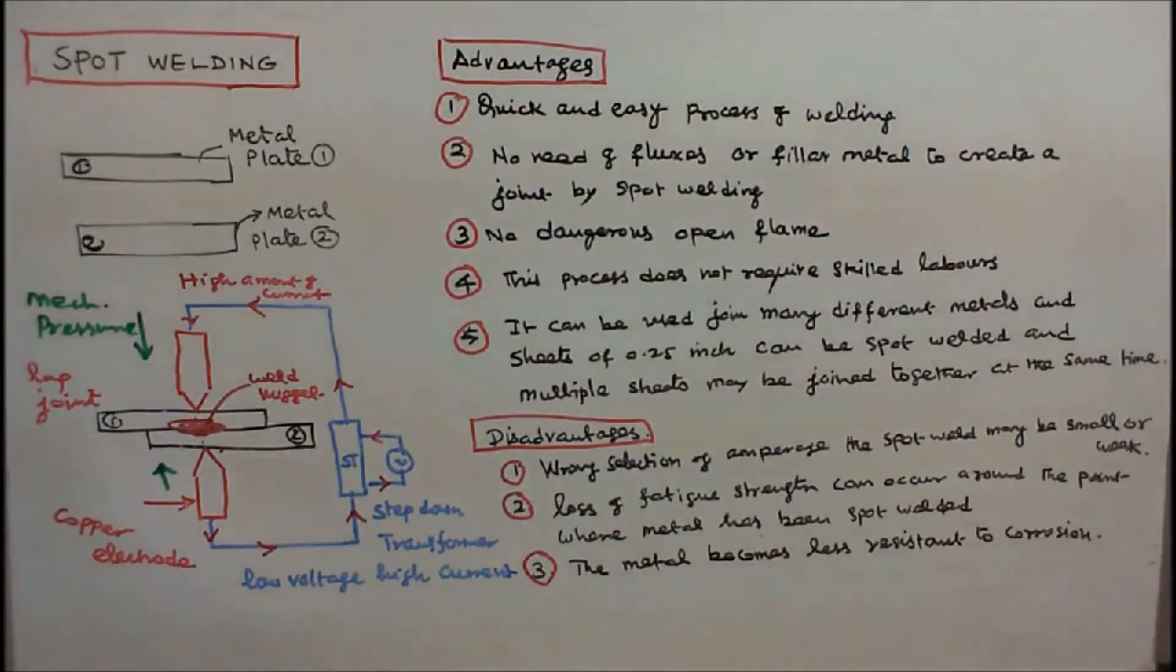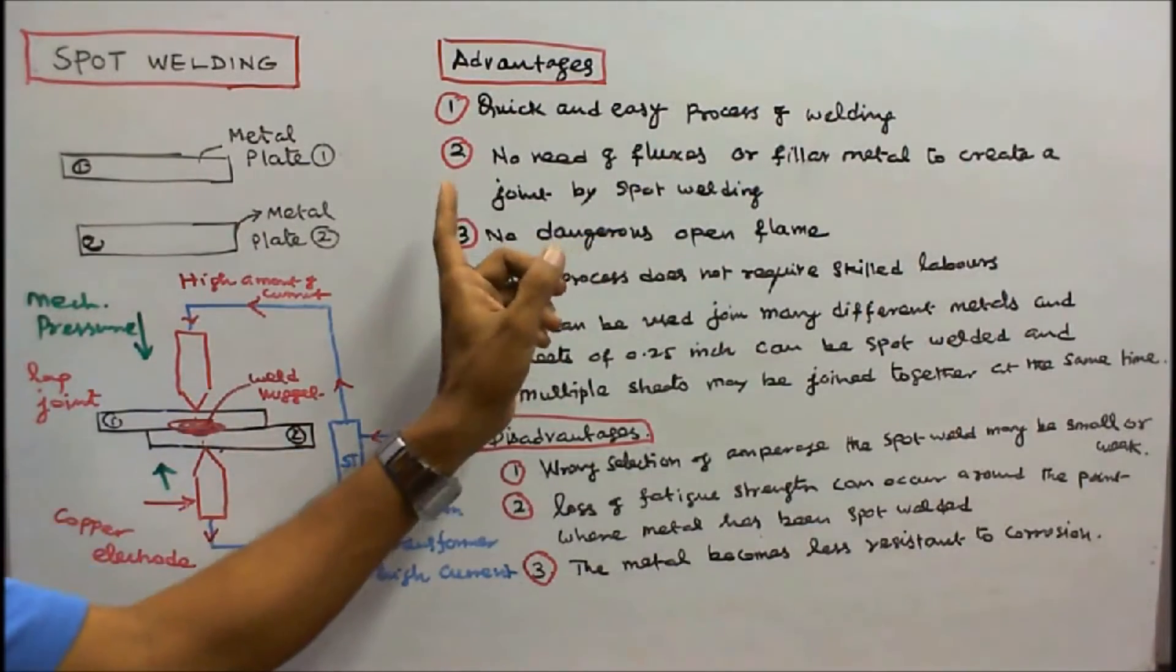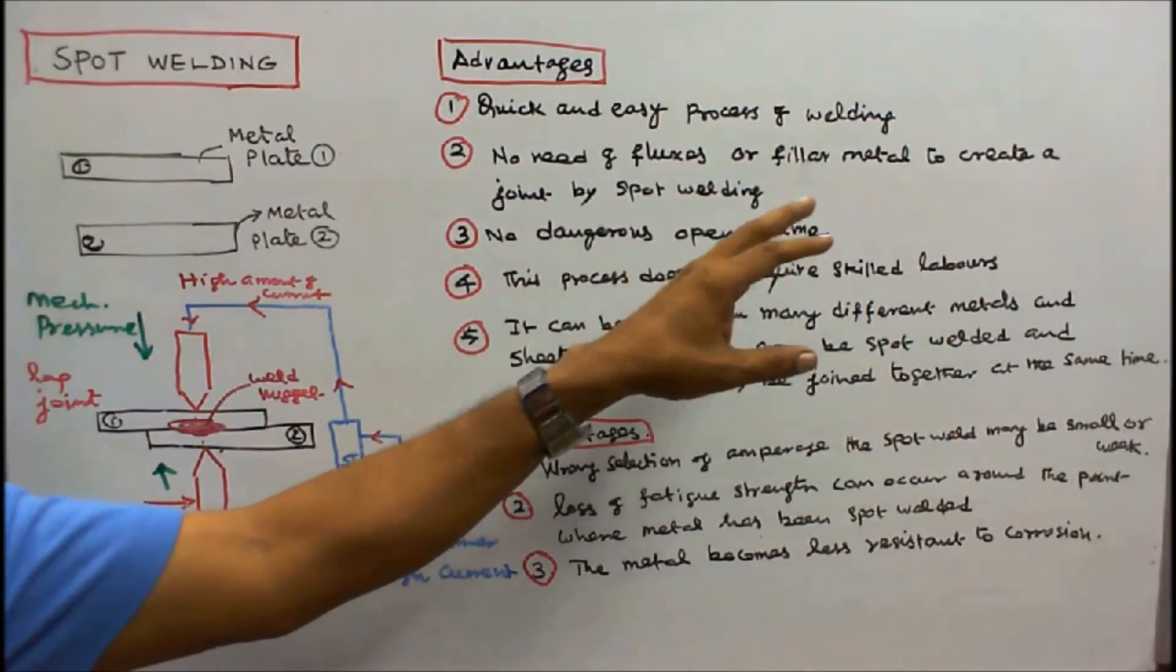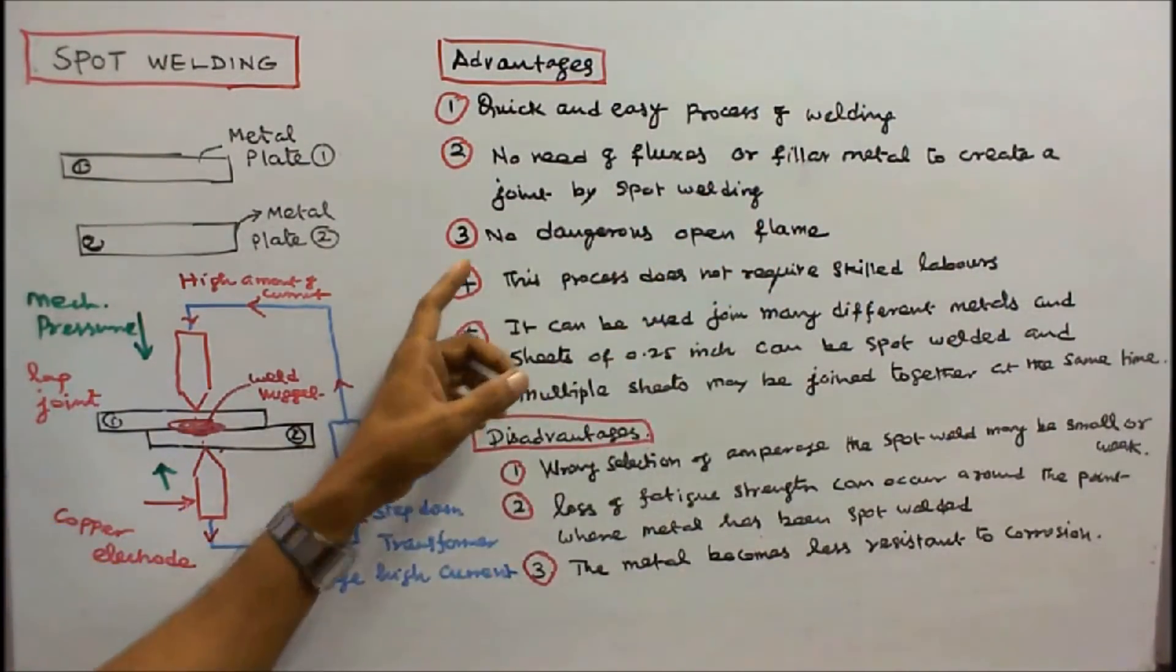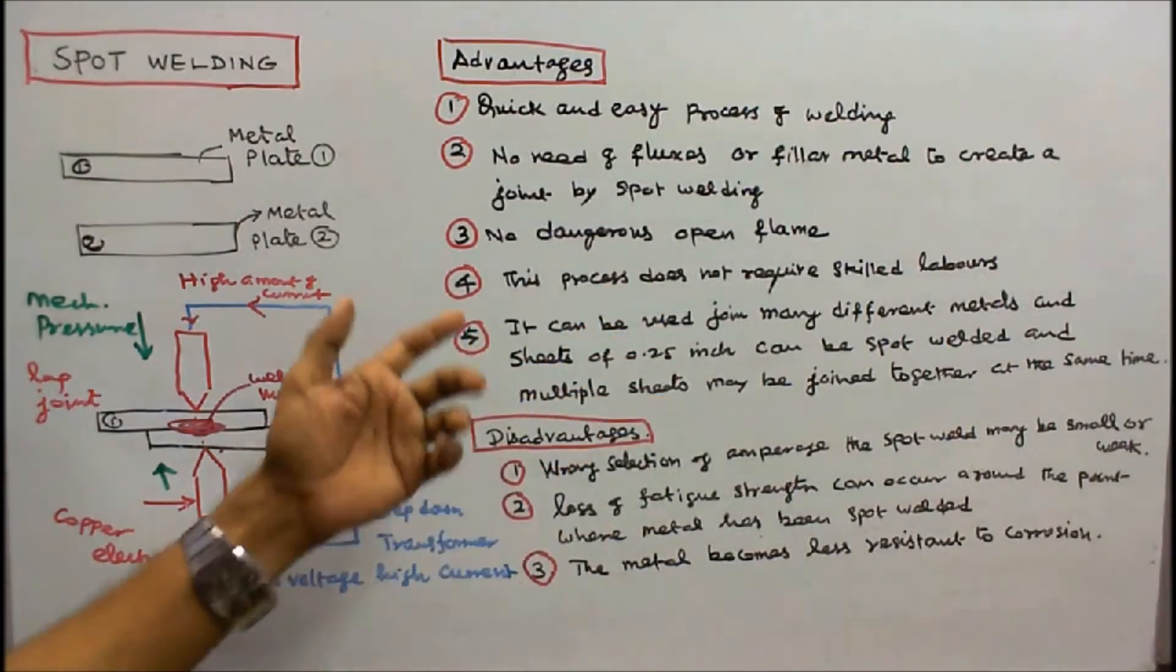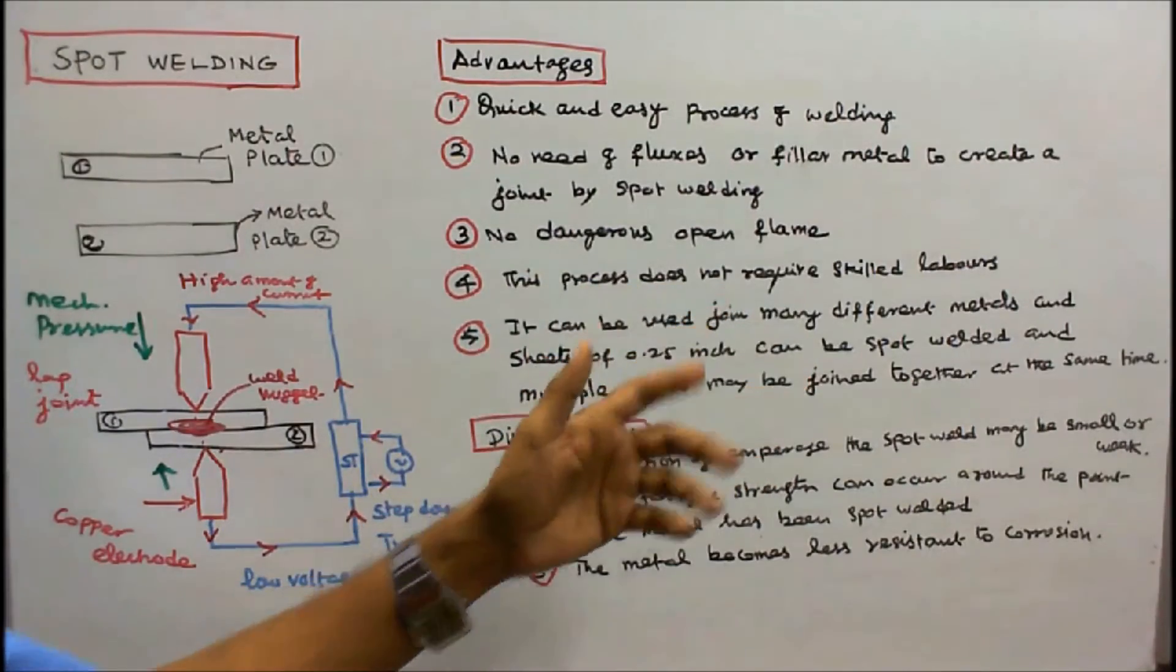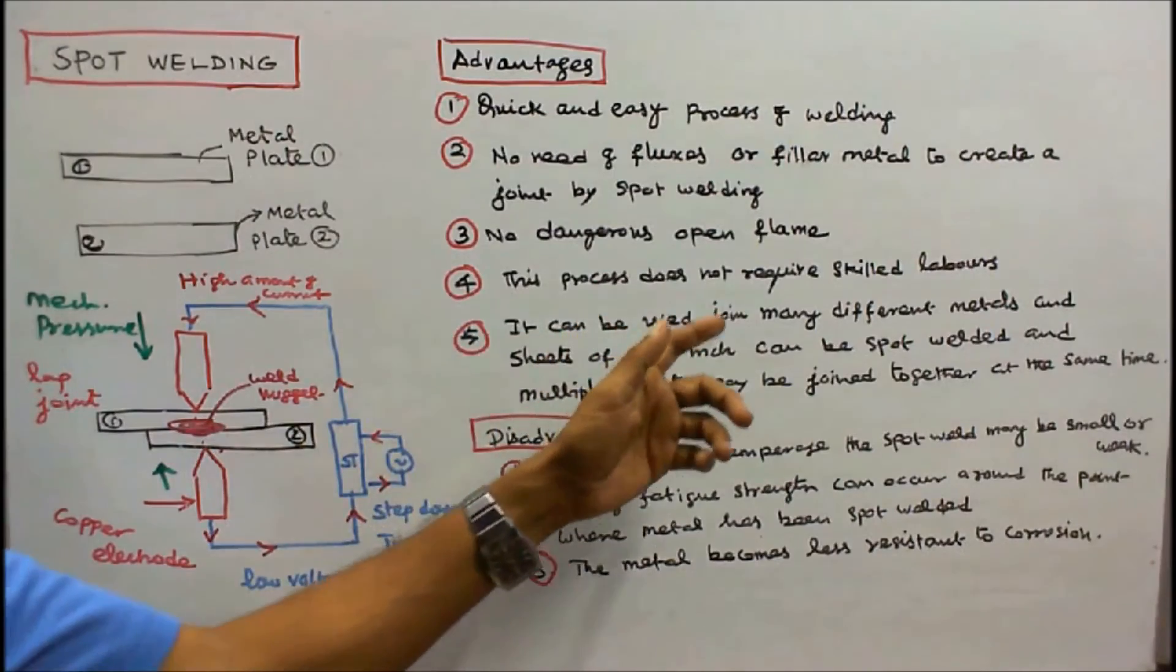Now we will see the advantages of spot welding. Number one, quick and easy process of welding. Number two, no need of fluxes or filler metal to create a joint by spot welding. Number three, no dangerous open flame.